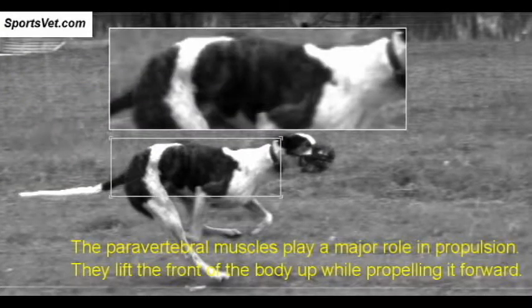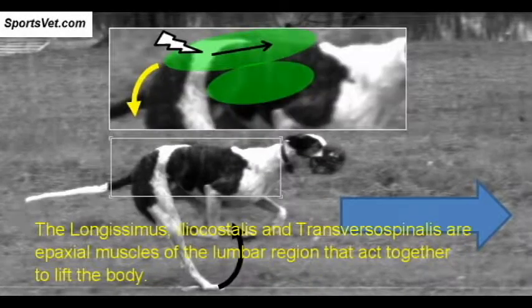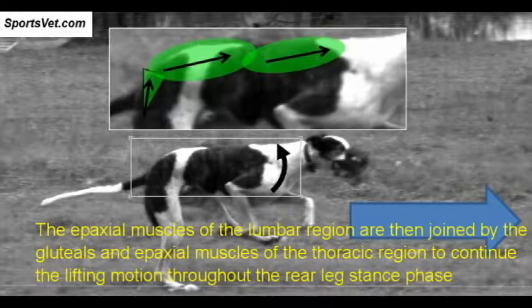The perivertebral muscles play a major role in propulsion. They lift the front of the body up while propelling it forward. Initially, there are eccentric contractions as the back absorbs the forces of impact. The longissimus, iliocostalis, and transversospinalis are epaxial muscles of the lumbar region that act together to lift the body. The epaxial muscles of the lumbar region work with the epaxial muscles of the thoracic region and the gluteals to continue the lifting motion throughout the rear leg stance phase.